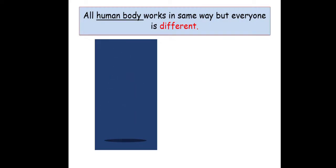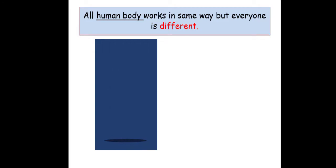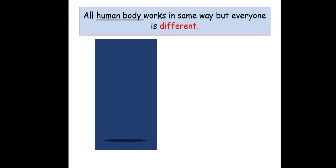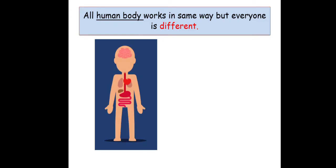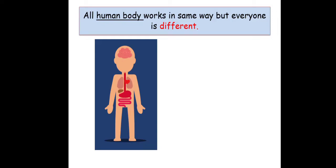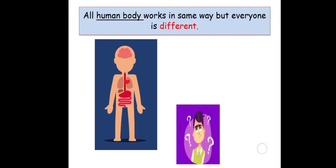Our human body works the same way. If I have a heart, you also have a heart. If I have a brain, even you have a brain. If I have two eyes, so do you. So all human bodies work the same way. But everyone is still different — we all look different. Though our body works the same way, we are different. Let's find out how.